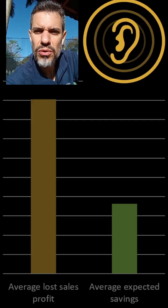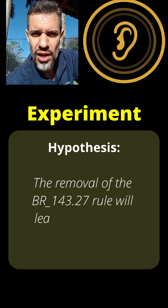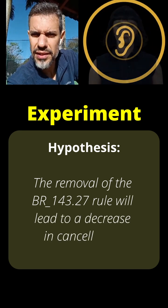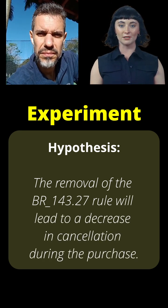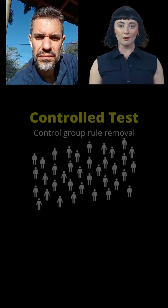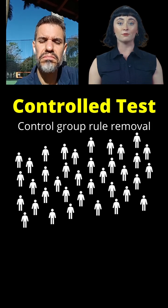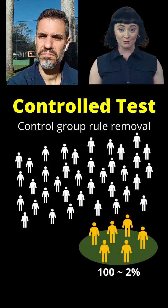I would like to conduct a test to validate if simply removing this rule would impact the cancellation rate during the purchase. How can I do that? You could perform a controlled test by revoking this rule only in a control group and evaluating the first 100 purchases.